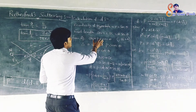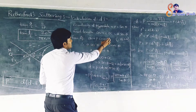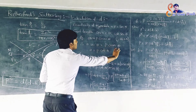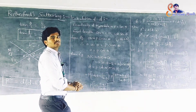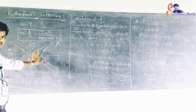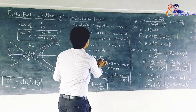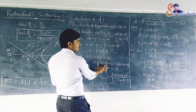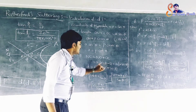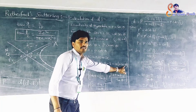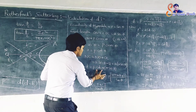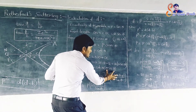Equating the two expressions for ON: A·sec θ equals P·cosec θ, so A equals P·cosec θ by sec θ, which gives A equals P·cot θ. From the figure, NC equals NO plus OC equals A·sec θ plus A equals A(1 plus sec θ). Substituting A equals P·cot θ, we get NC equals P·cot θ into (1 plus sec θ).